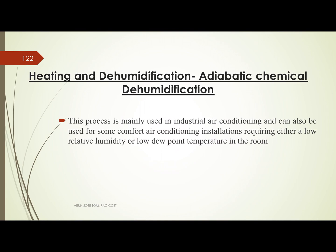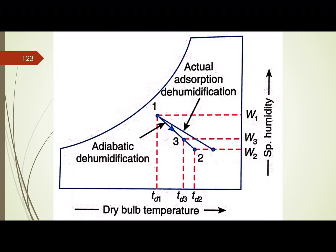The next process is chemical dehumidification, also called the adiabatic chemical dehumidification process. This is represented on the psychrometric chart.